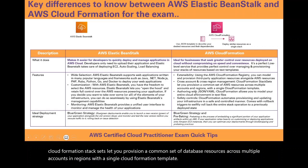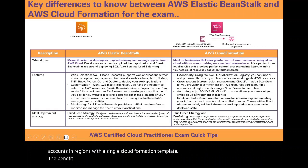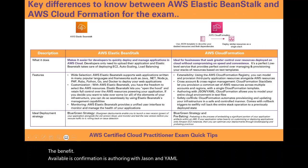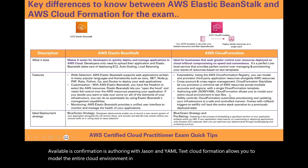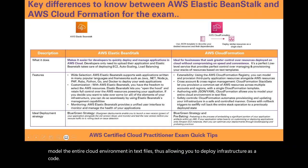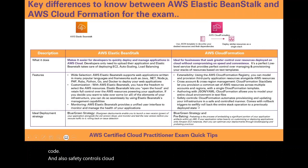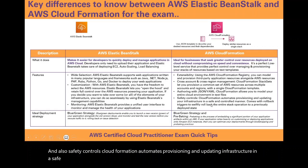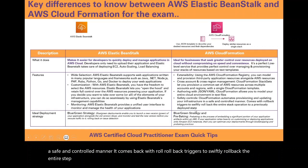A key benefit of AWS CloudFormation is authoring with JSON and YAML text. CloudFormation allows you to model your entire cloud environment in text files, enabling you to deploy infrastructure as code. Additionally, safety controls: CloudFormation automates provisioning and updating your infrastructure in a safe and controlled manner, with rollback triggers to swiftly roll back the entire stack operation to a previously deployed state.